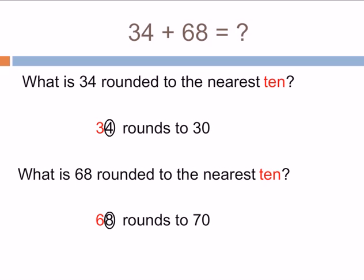What is 68 rounded to the nearest 10? The tens place is 6. The number to the right is 8. That's more than 5, so the 6 goes up 1 to 7. So 68 rounds to 70.